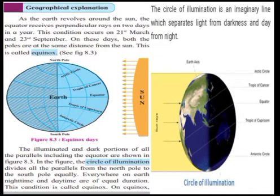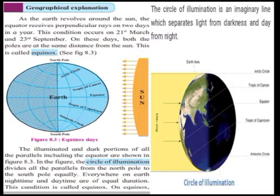As the earth revolves around the Sun, the equator receives perpendicular rays on two days in a year. This condition occurs on 21st March and 23rd September. On these days both the poles are at the same distance from the Sun — this is called equinox. You can see figure 8.3 on the screen, the same figure you can find on page number 47 of your geography textbook.